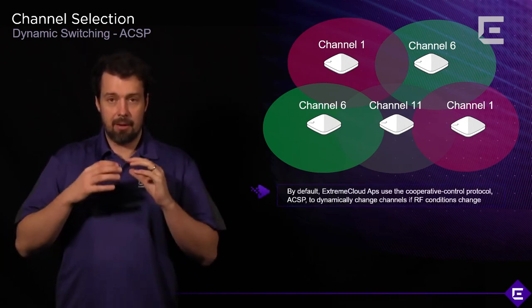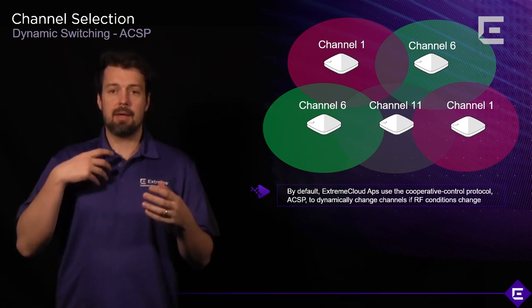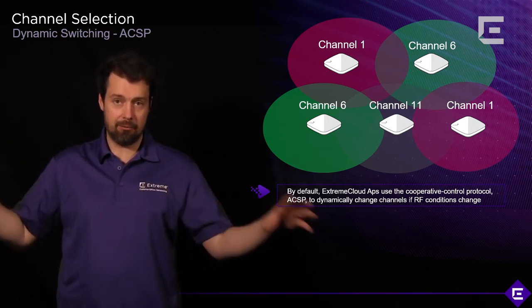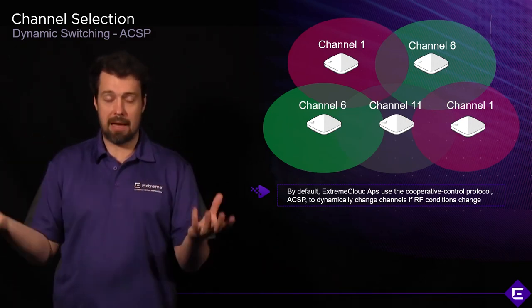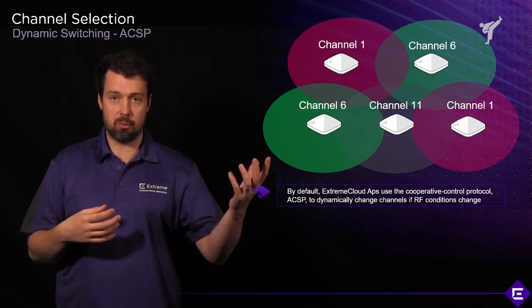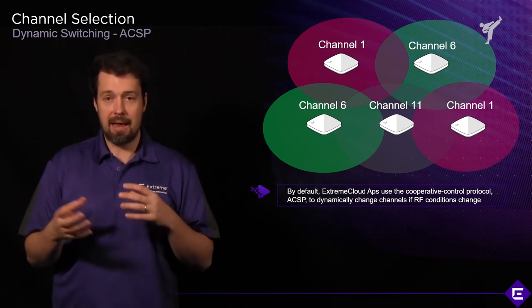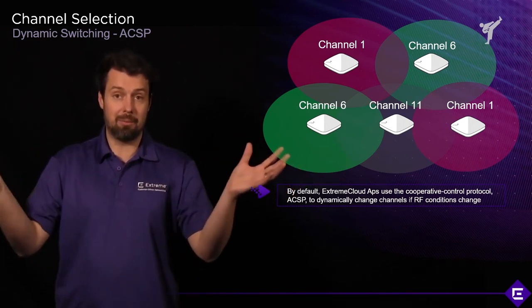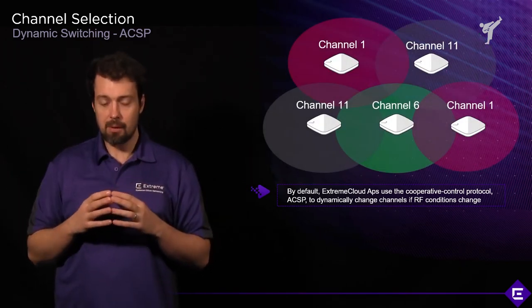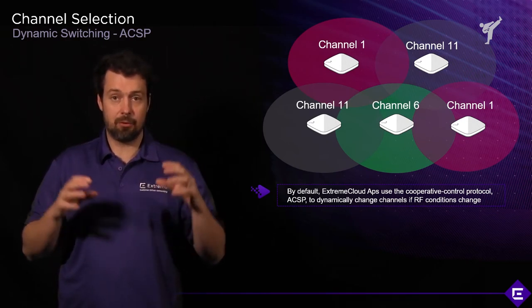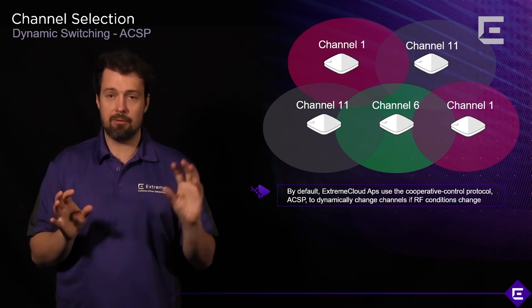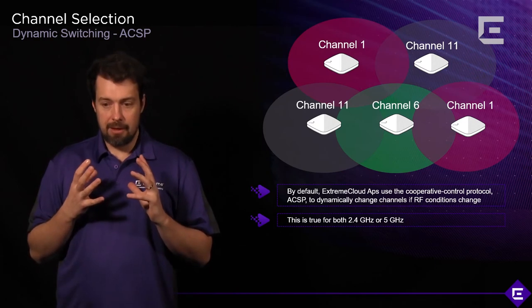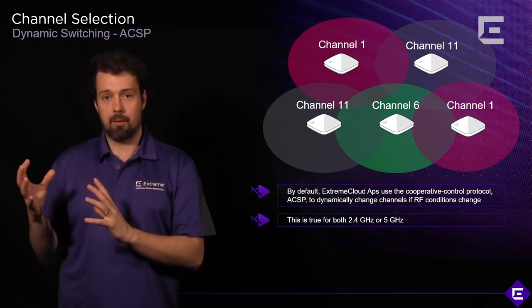By default, when the APs and radios power up, ACSP takes time to scan through all possible channels, gathering information about neighboring access points — both your own deployment APs and others. It also looks for channel utilization and interference, then coordinates with all other APs in the area to determine the best channel and best power setting for each of the two radios on the AP — for both 2.4 GHz and 5 GHz.